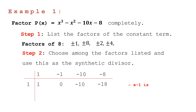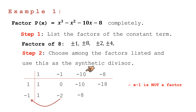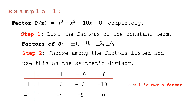Since the remainder is not equal to 0, x minus 1 is not a factor. Let's try negative 1. Bring down positive 1, then: 1 times negative 1 equals negative 1; negative 1 plus negative 1 equals negative 2; negative 2 times negative 1 equals positive 2; positive 2 plus negative 10 equals negative 8; negative 8 times negative 1 equals positive 8; positive 8 plus negative 8 equals 0. The remainder is 0, so x plus 1 is a factor.